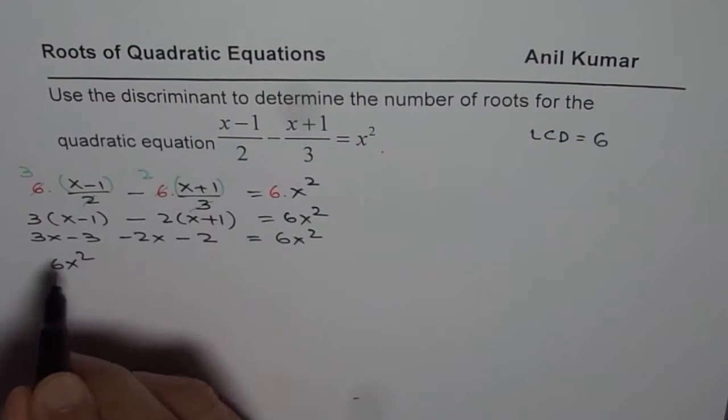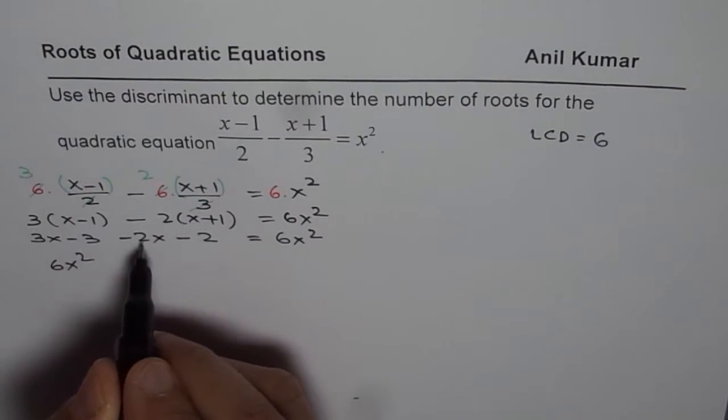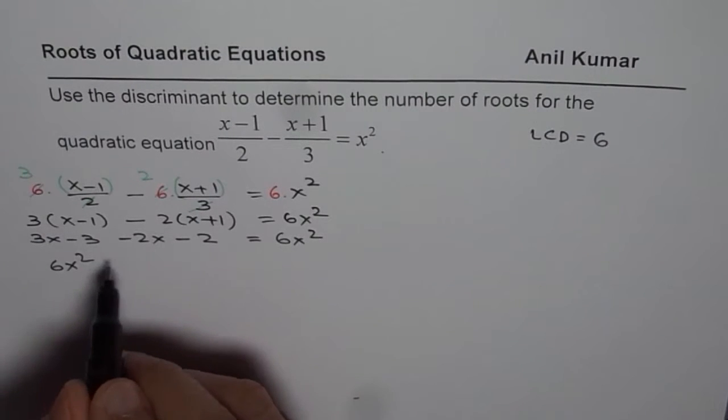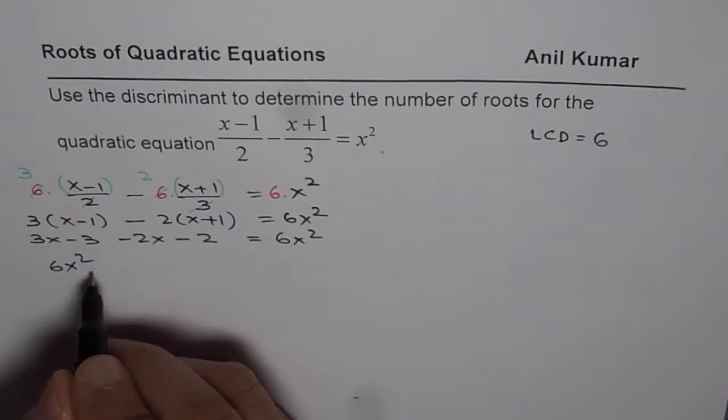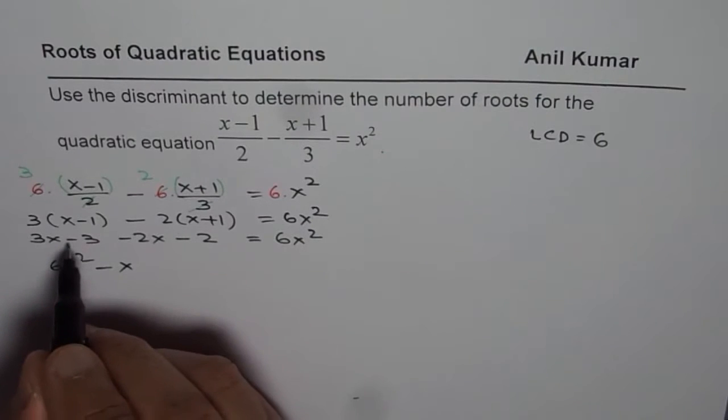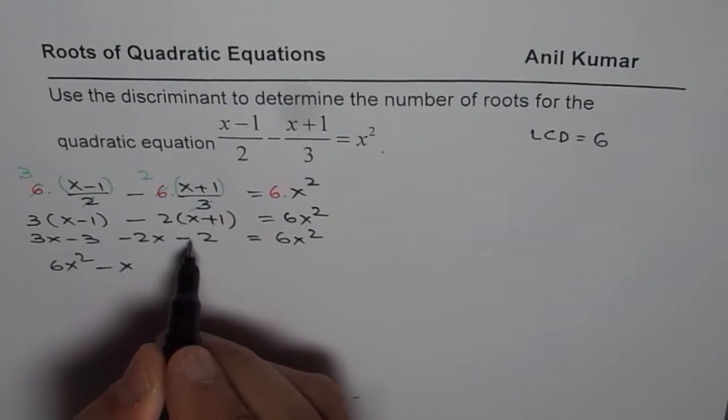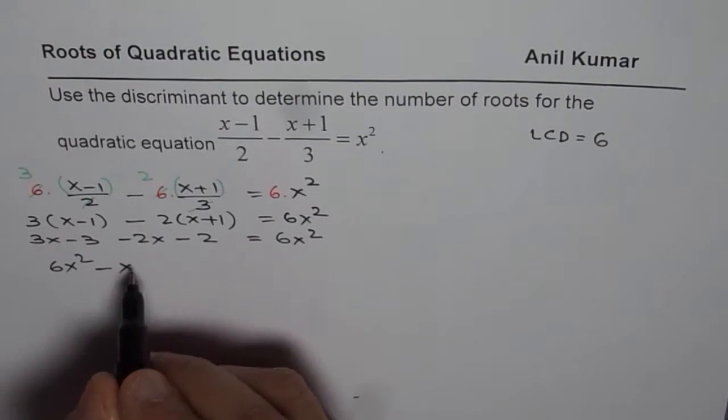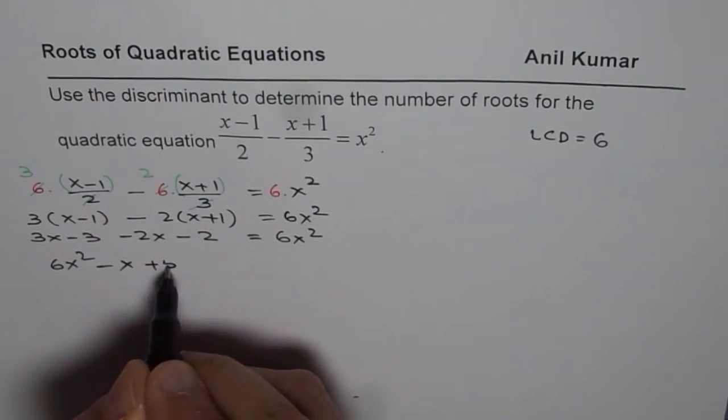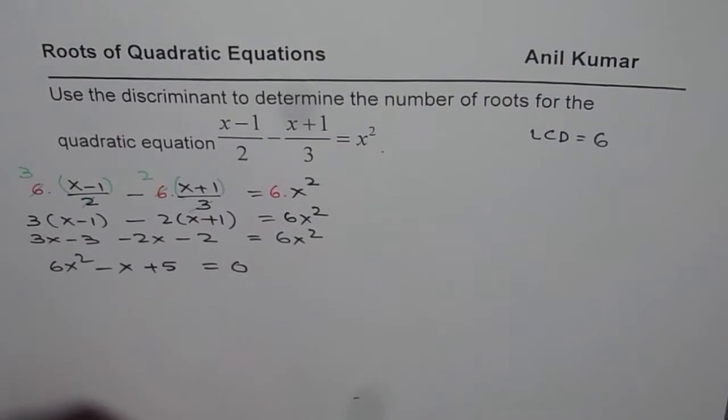Now bring all the terms together. So we have 6x squared. 3x minus 2x is x. When you bring it on the right side, it becomes minus x. Minus 3 minus 2 is minus 5. On the other side, it will be plus 5 equals 0.